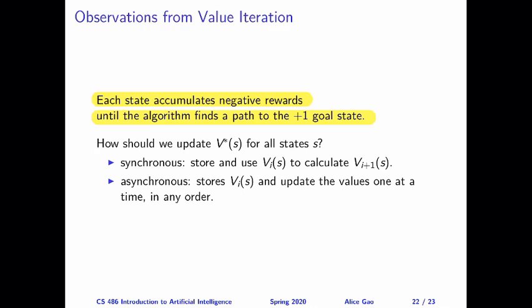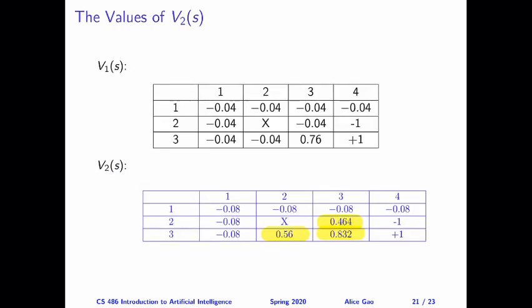I want to make a final important point: there are in fact two versions of the value iteration algorithm — the synchronous version and the asynchronous version. When I was discussing the calculations, I was strictly following the synchronous version. The synchronous version says we start with the estimates for iteration i — corresponding to a big table in our example — and then use all of those estimates to calculate the estimates for iteration i plus 1. Once we calculate all estimates for all states, we update all of them at the same time.